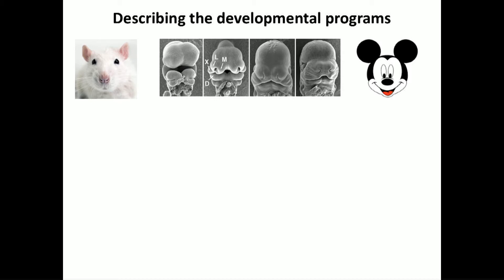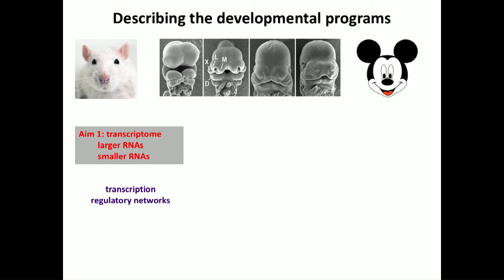The general developmental program that builds the face. We are really focusing on the morphogenetic issues between about 10 and 12 stages of development, and our project really had three aims. The first one was general transcriptome — both larger RNAs and smaller RNAs that would be able to characterize transcription and the gene regulatory networks.